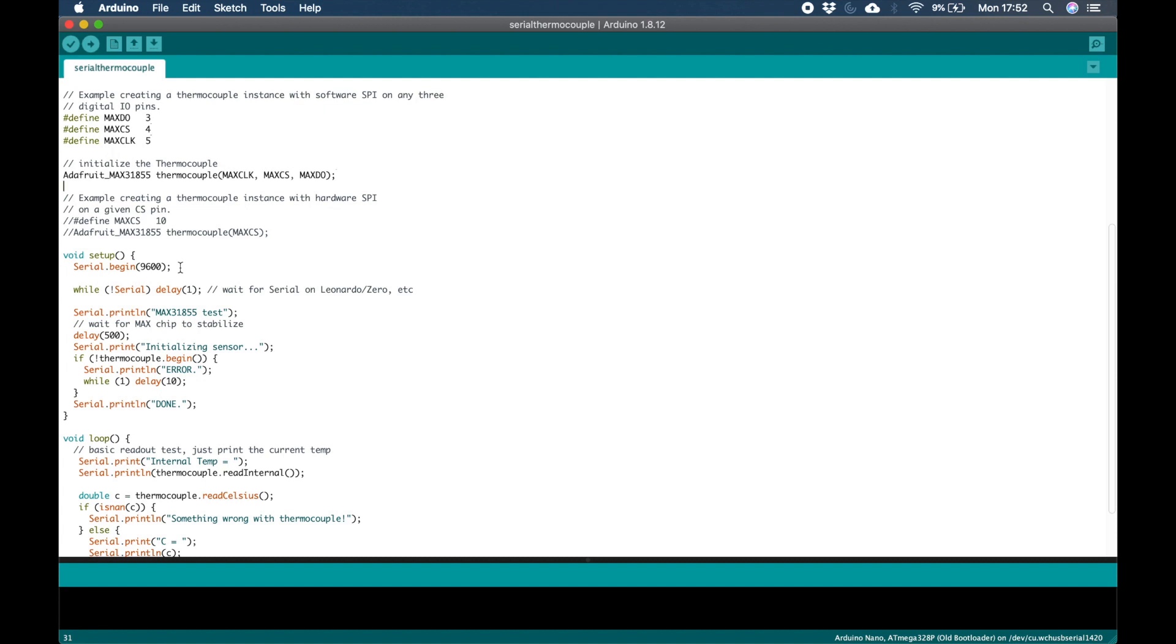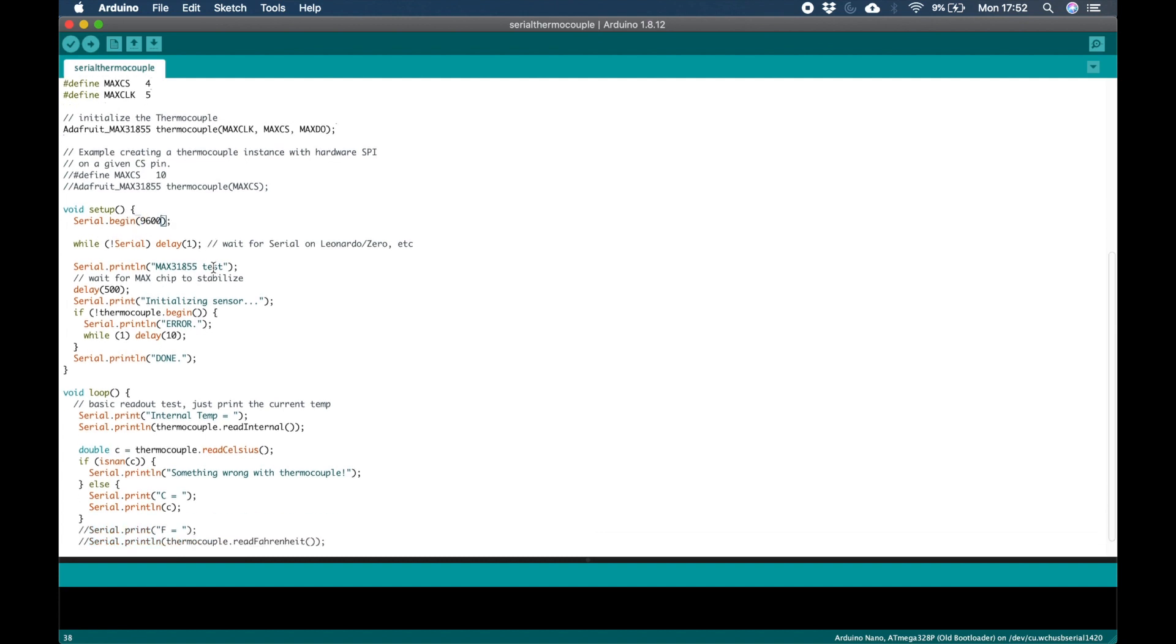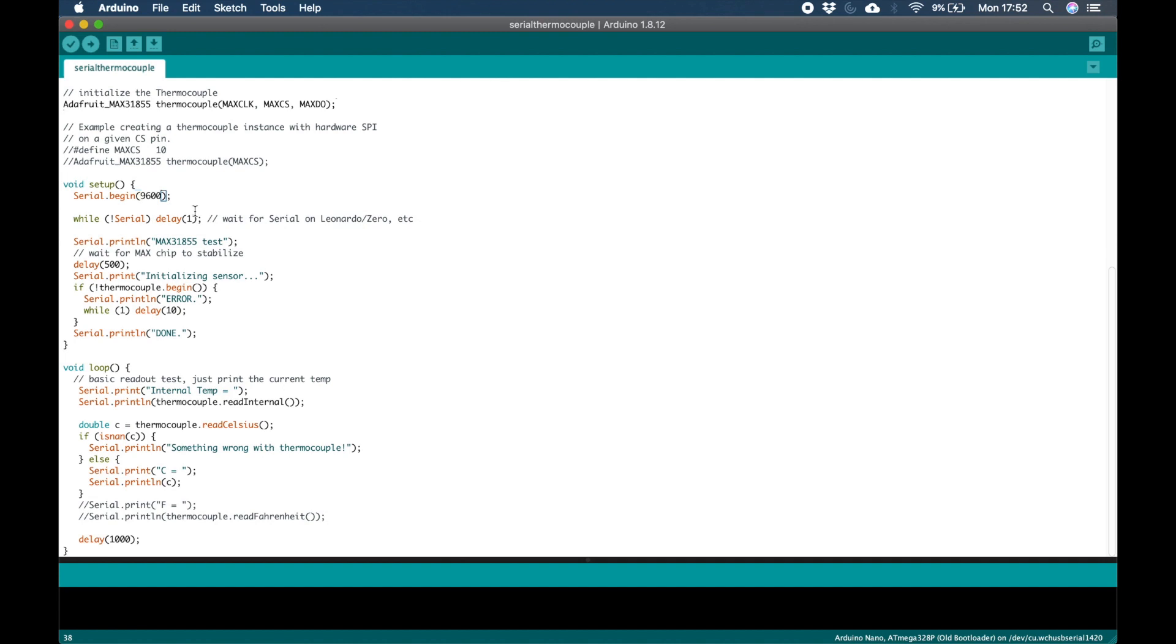In the setup loop we first define the baud rate, this is the communications over USB serial comms. Once the thermocouple has been initialized and no error has returned the program will exit setup and enter loop. At the end of the loop you see the delay function with 1000 milliseconds. This gives us a cycle rate of roughly 1 second per cycle.